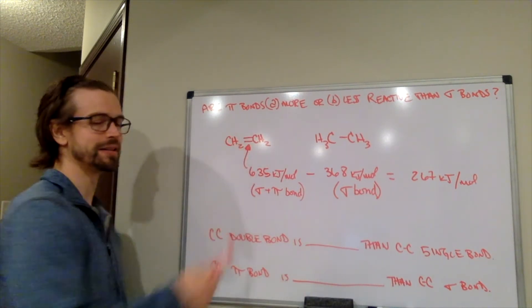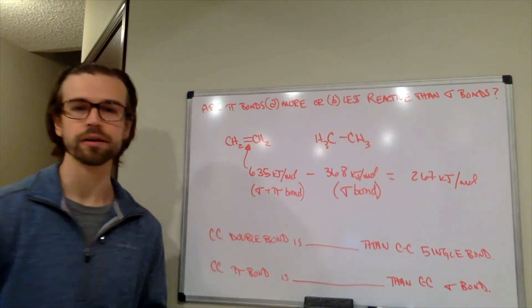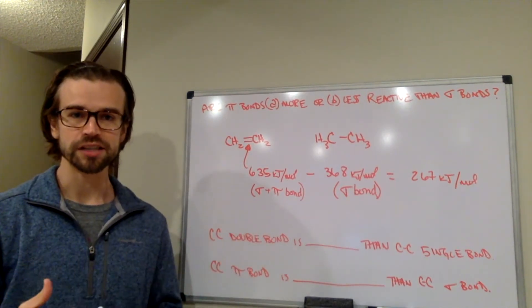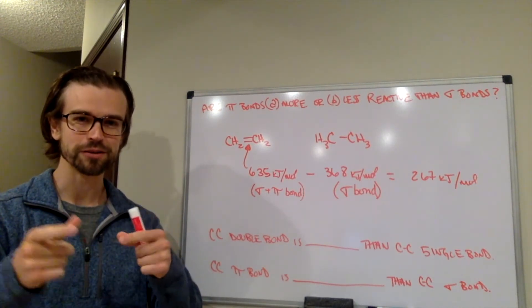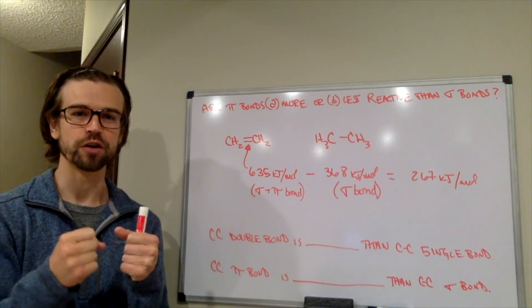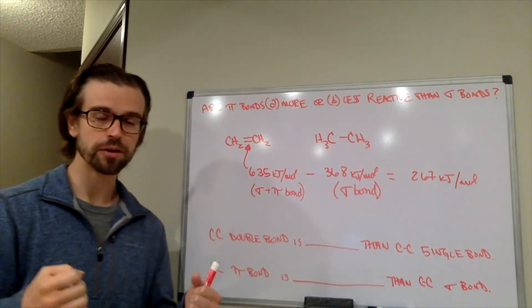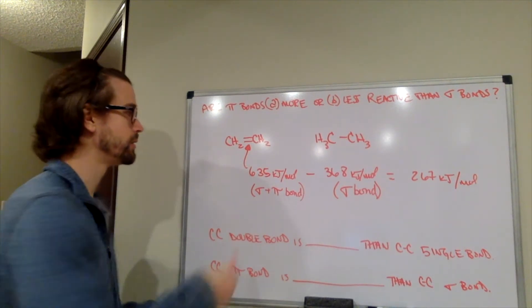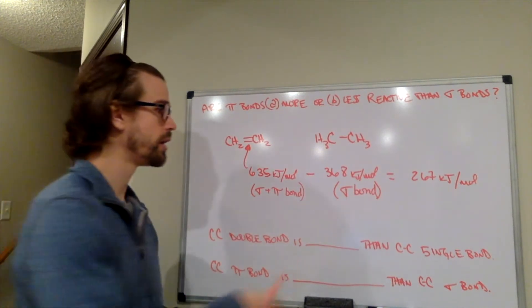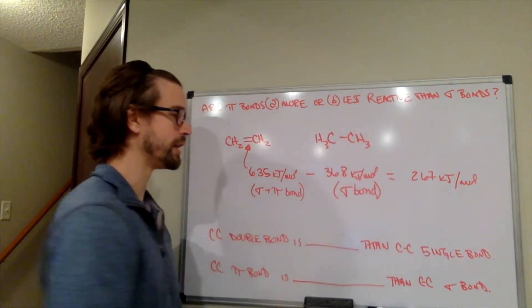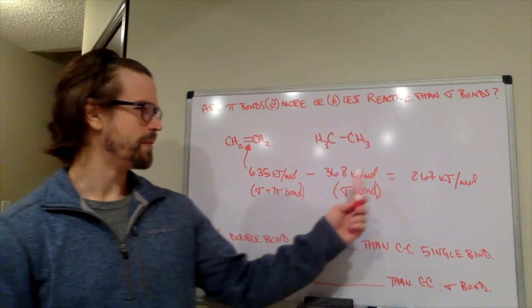A C double bond C - that means it's talking about both the sigma and the pi bond - the bond dissociation energy of that. So remember what that means - what does that mean? Bond dissociation energy - the energy required to break the bond. If it takes more energy to break the bond, it's a stronger bond. A double bond takes 635 kilojoules per mole to break. A CC single bond takes 368 kilojoules per mole.